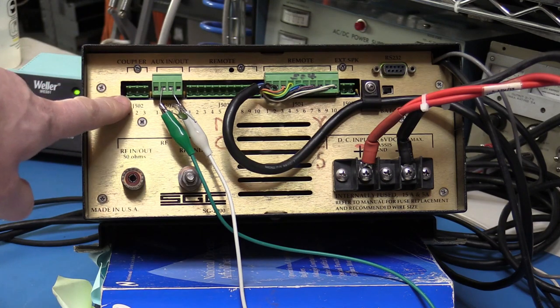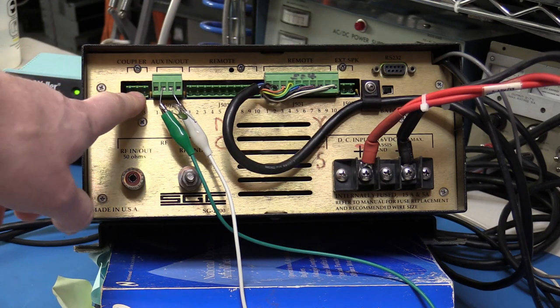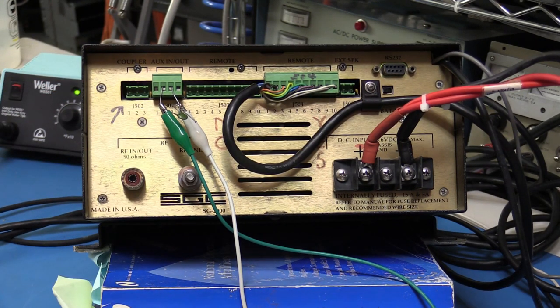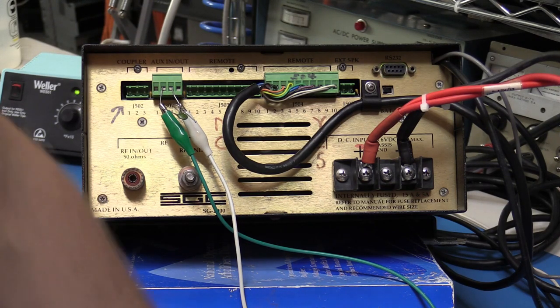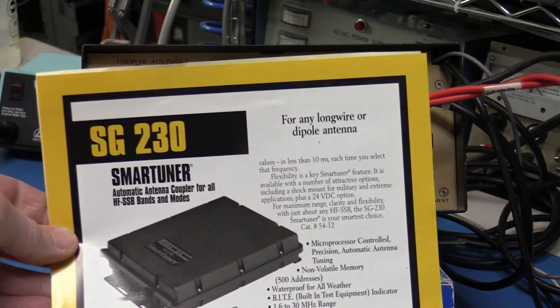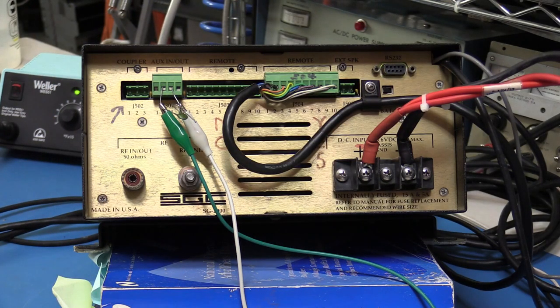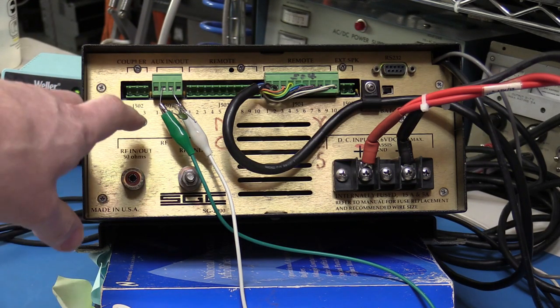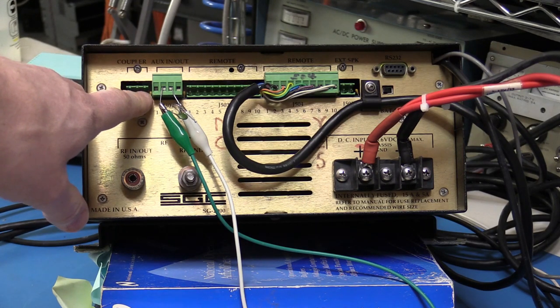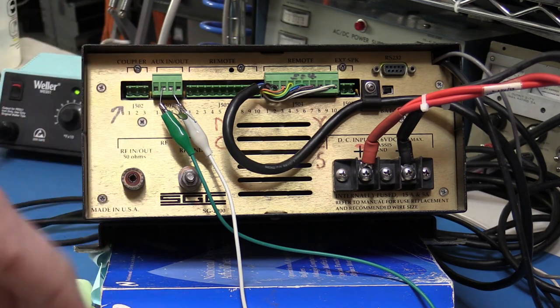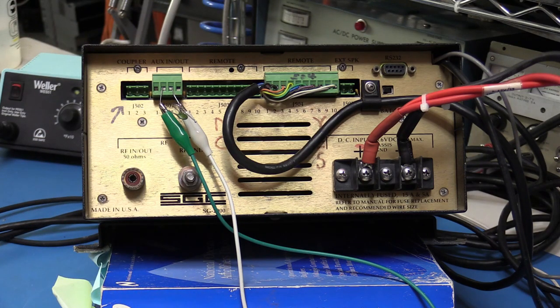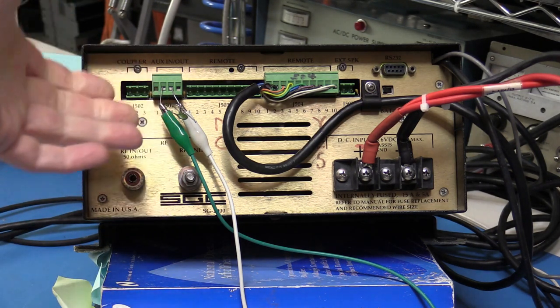There's also the coupler connector. This is for the automatic antenna tuner. I actually got one of those as well with this. Here is the brochure. I haven't used it yet, but I will soon. And that's ground, 12 volts and tuned, which is where the antenna tuner tells the radio it has tuned. And there's an indicator for that on the front panel of the display.